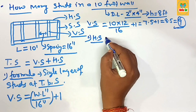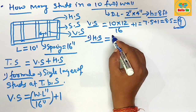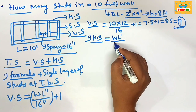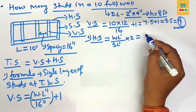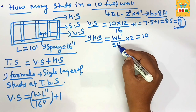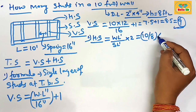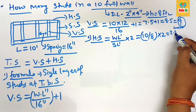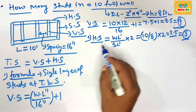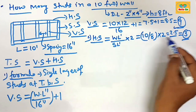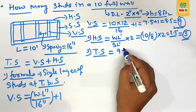Next, find the total number of horizontal studs. The formula is: wall length in feet divided by stud length in feet, multiplied by 2. The wall length is 10 feet and the stud height is 8 feet. So 10 divided by 8, multiplied by 2, gives 2.5 — rounded up to 3 studs. The total number of horizontal studs required is 3 studs.